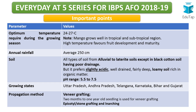This was also a question from the previous lecture: what is the optimum temperature required during the growing season? It is 24 to 27 degrees Celsius. Mango grows well in tropical as well as subtropical regions. For a quick recap, in lectures one and two we covered apple, which is a temperate crop — so don't confuse the two. The average annual rainfall required for mango is 250 centimeters.